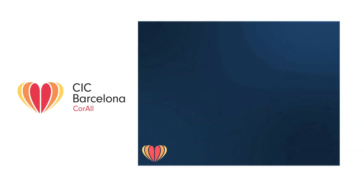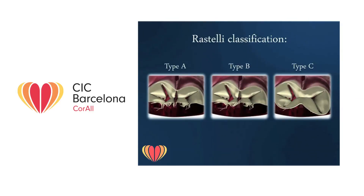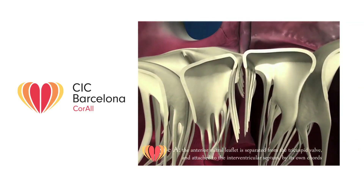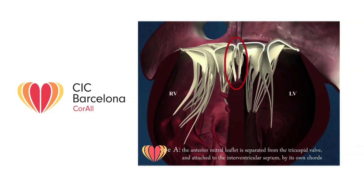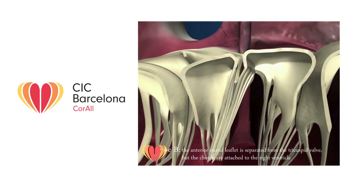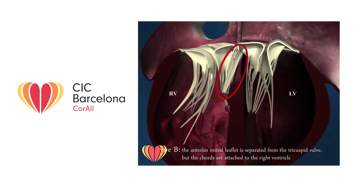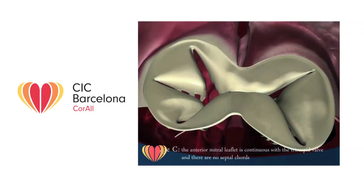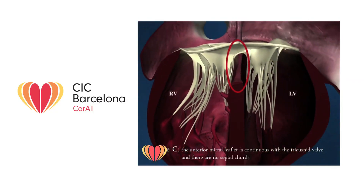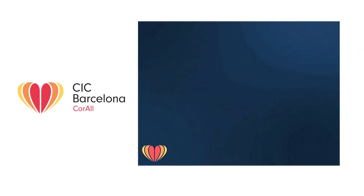Three different types of the complete form can occur based on the Rastelli classification. Type A: the anterior mitral leaflet is separated from the tricuspid valve and attached to the interventricular septum by its own cords. Type B: the anterior mitral leaflet is separated from the tricuspid valve but the cords are attached to the right ventricle. Type C: the anterior mitral leaflet is continuous with the tricuspid valve and there are no septal cords.